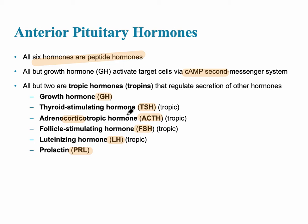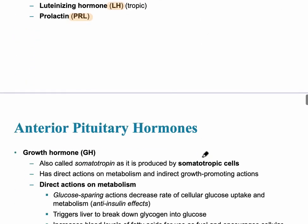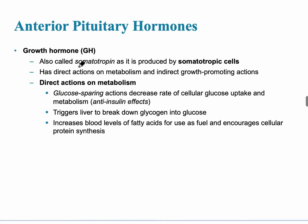All of them but the growth hormone work via a second messenger system. The growth hormone is also called somatotropin because it's produced by somatotropic cells. It has direct actions on metabolism and indirect effects on growth promoting activities. The direct effect is glucose sparing, which decreases glucose uptake and metabolism. It also triggers the liver to break down glycogen into glucose, making glucose more available for growth.